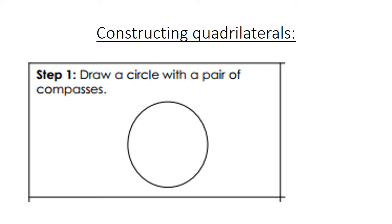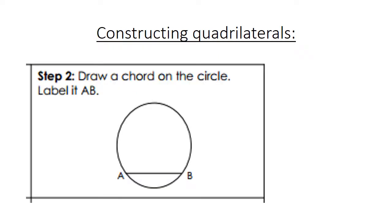Constructing quadrilaterals. Step 1. We draw a circle with a pair of compasses. Step 2.